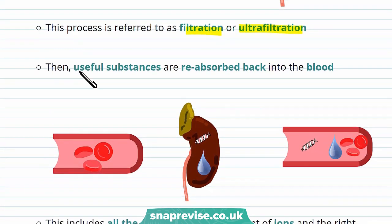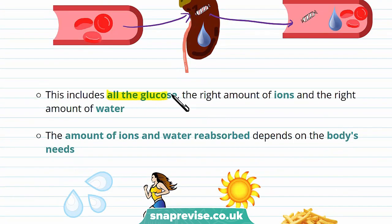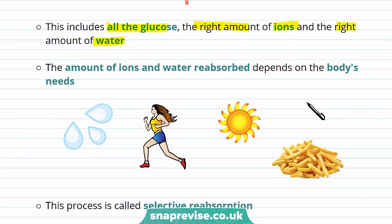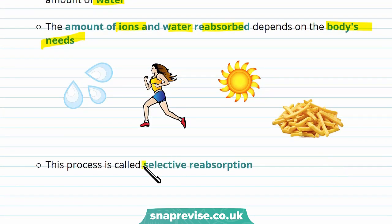After filtration, useful substances are then reabsorbed back into the blood. The things that are reabsorbed include all the glucose, the right amount of ions, and the right amount of water. The amount of ions and water reabsorbed depends on the body's needs — for example, if you exercise or it's hot and you become sweaty and lose water, you might want to reabsorb more water to compensate. This process is called selective reabsorption.